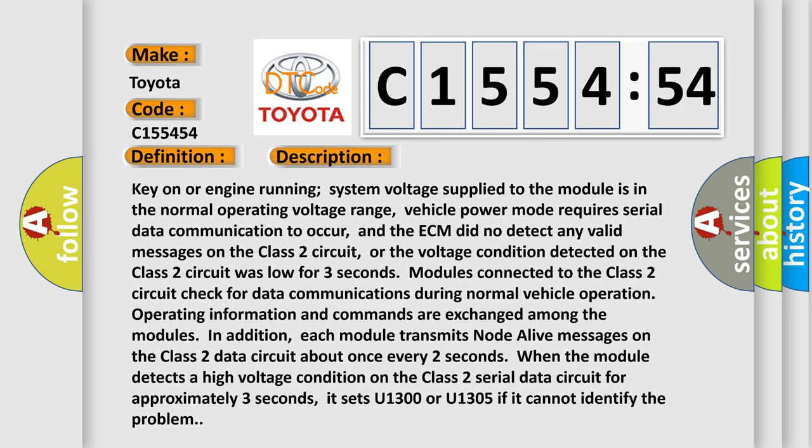Key on or engine running, system voltage supplied to the module is in the normal operating voltage range, vehicle power mode requires serial data communication to occur, and the ECM did not detect any valid messages on the Class 2 circuit, or the voltage condition detected on the Class 2 circuit was low for three seconds. Modules connected to the Class 2 circuit check for data communications during normal vehicle operation. In addition, operating information and commands are exchanged among the modules.